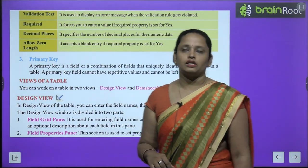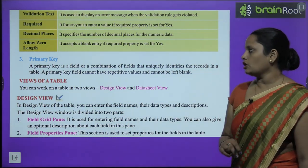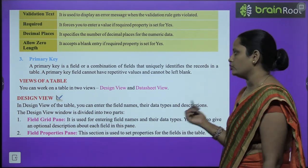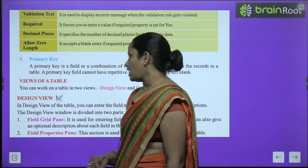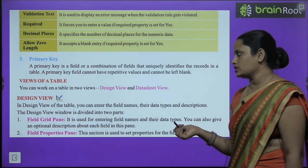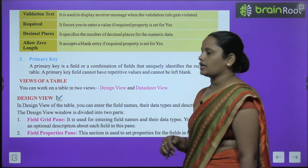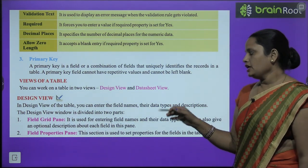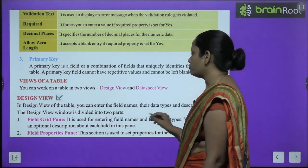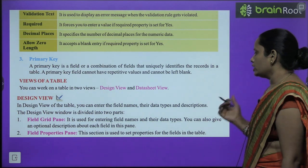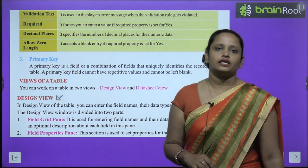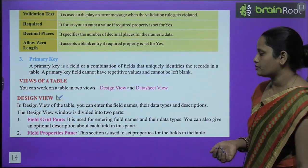Next comes Views of a Table. You can work on a table in two views: Design View and Datasheet View. In Design View you can enter the field name, the data type, and description. The Design View window is divided into two parts: the Field Grid Pane and the Field Properties Pane. The Field Grid Pane is used for entering field names and their data types, and you can also give an optional description about each field.